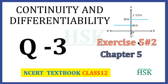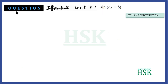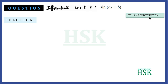This is question number 3 of exercise 5.2 from the chapter Continuity and Differentiability. The question is: differentiate sin(ax+b) with respect to x. We are going to solve this question by two methods — first by using the substitution method, and then by the chain rule.